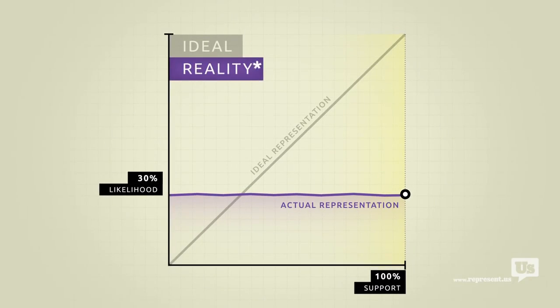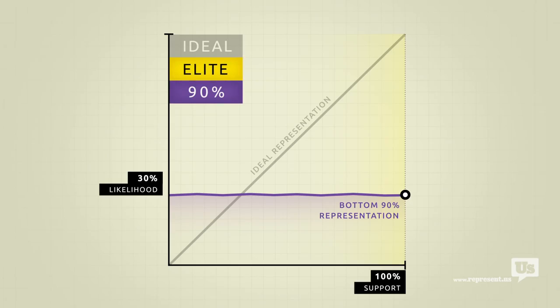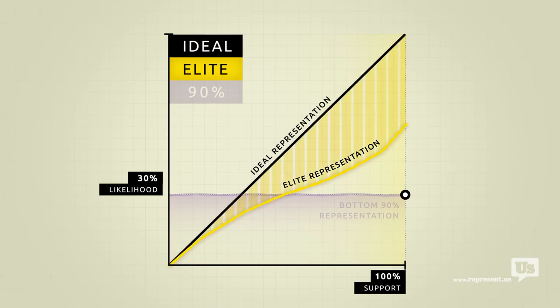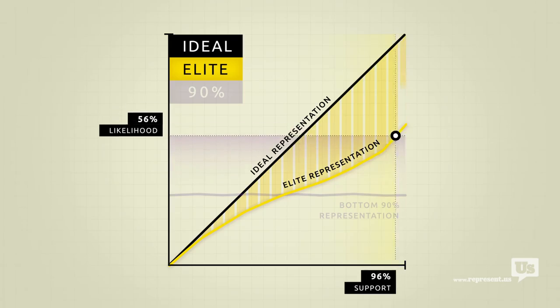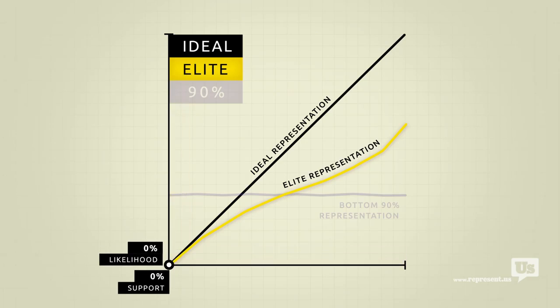But there's a catch. This flat line only accounts for the bottom 90% of income earners in America. Economic elites, business interests, people who can afford lobbyists, they get their own line. Look at how much closer their line is to the ideal. When they want something the government is much more likely to do it. And when they don't, they have the power to completely block it from happening, no matter how much the rest of the country supports it. They get what they want and guess who ends up paying for it.